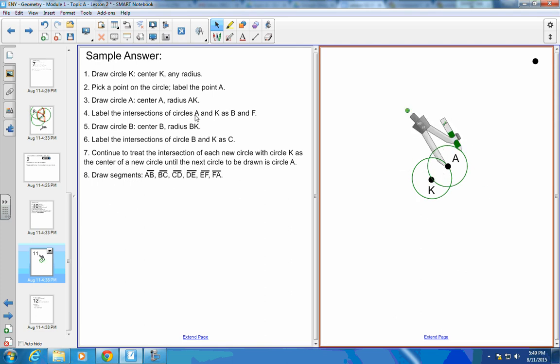Label the intersections of circle A and K as B and F. So here is one intersection of A and K, I'll label that B. And here is the other intersection of A and K, I'll label that F. Draw circle B centered at B. Put this back on there and notice I'm not changing that. So circle B centered at B, and it's going to have the same radius so I don't change that at all. And I'm going to label the intersection of B and K as C. So B and K intersect here. That's my new intersection and I'm labeling that as C.